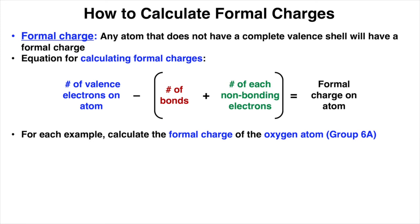The equation for calculating formal charges is as follows. The number of valence electrons on the atom minus, in parentheses, the number of bonds plus the number of non-bonding electrons equals the formal charge of an atom. So let's do a few examples.